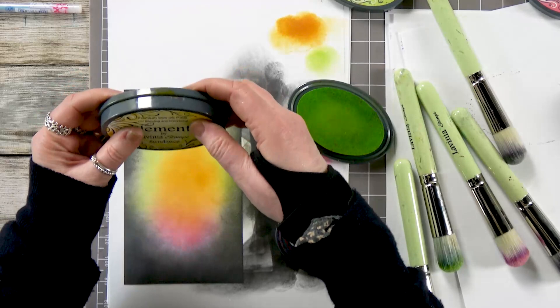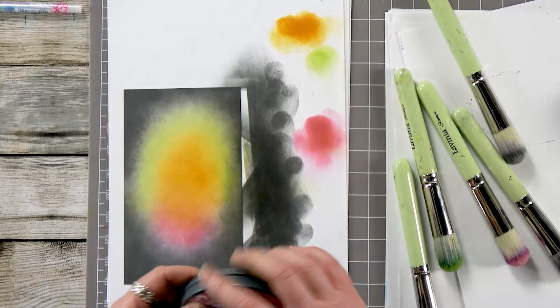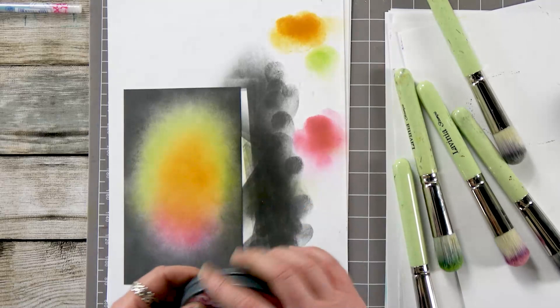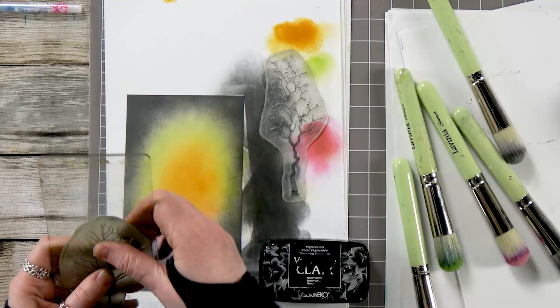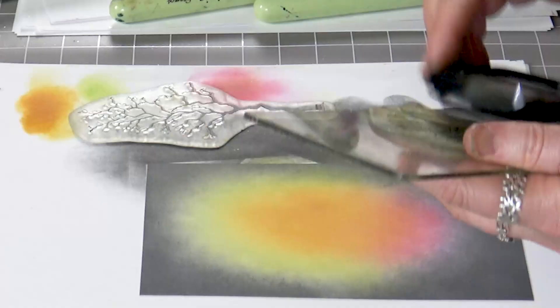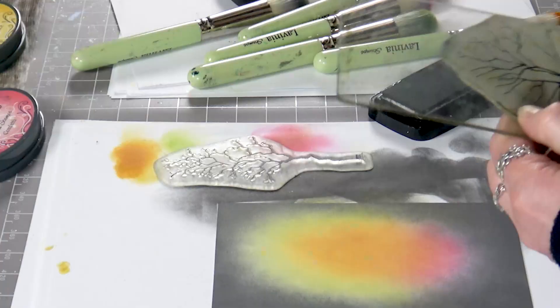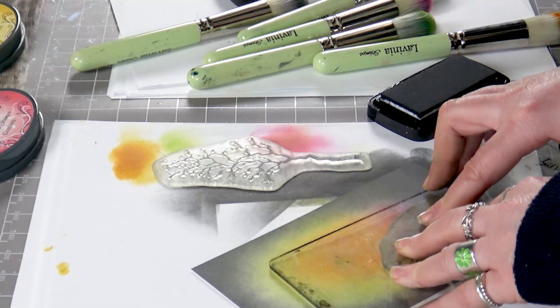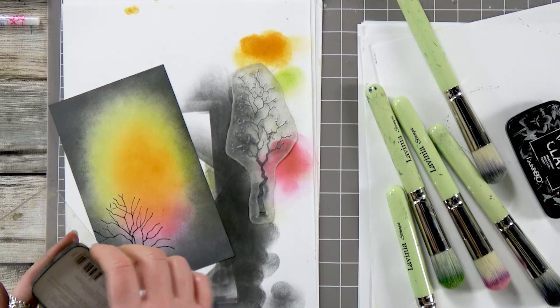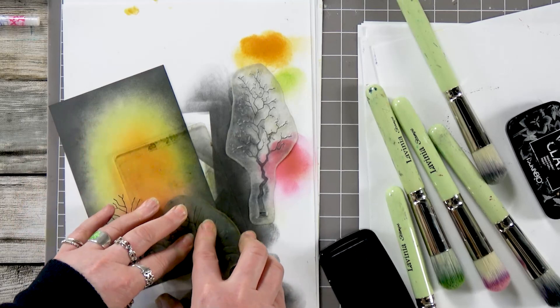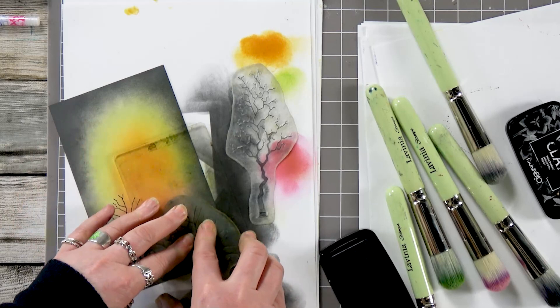Put those lids back on and then I've got some lovely trees here that I'm going to ink up in the Nocturne and then just pop that down, give it good press. And again I'm going to do that at a slightly different height so it doesn't look too repetitive.